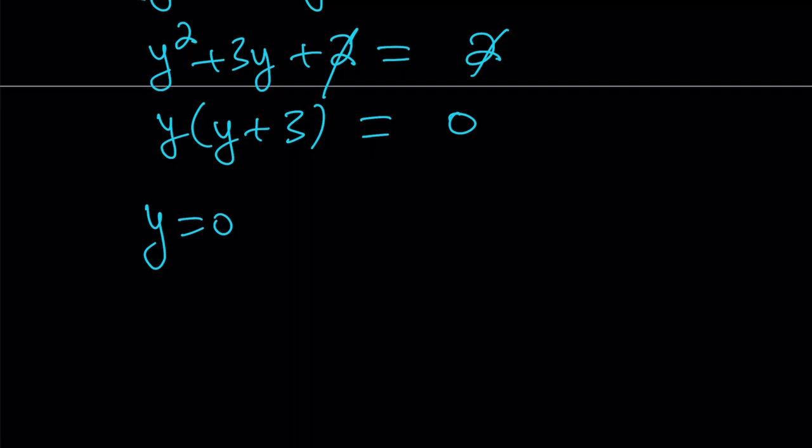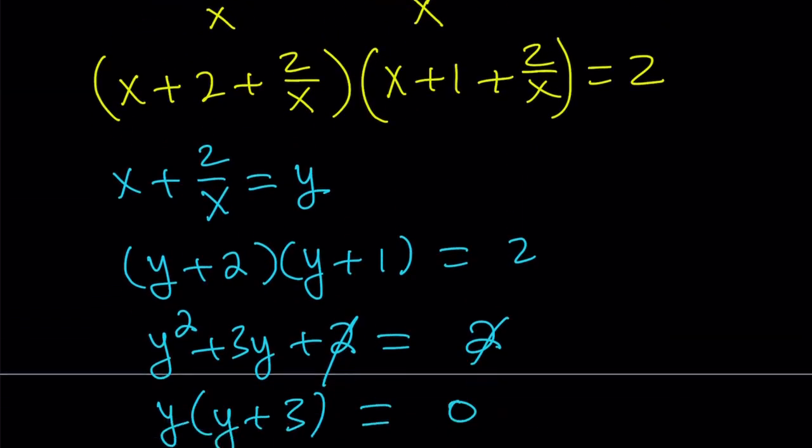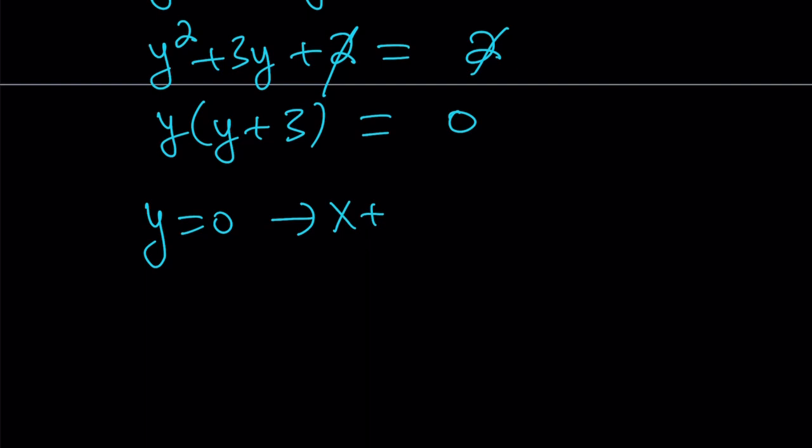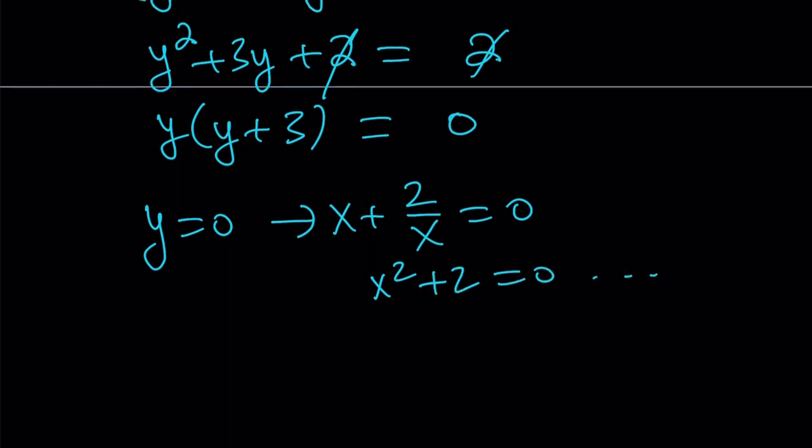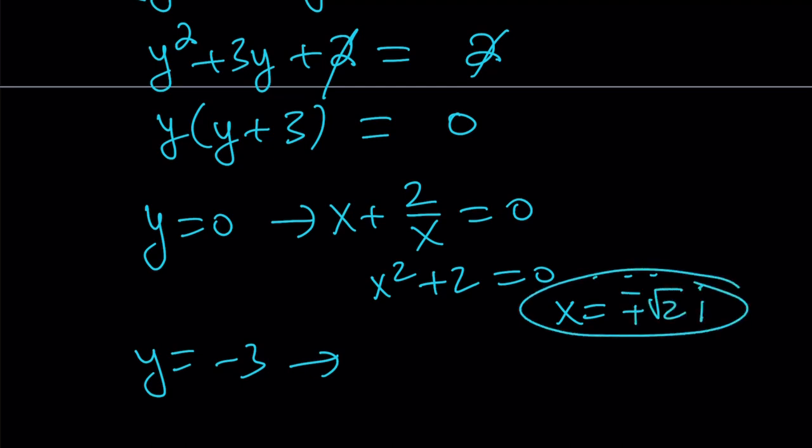From here we get two solutions, y equals 0. Let's see where y equals 0 takes us. Because we have x + 2/x equals 0. And obviously, this is going to give us the complex solutions, because this ends up being x² + 2 is equal to 0. And as you know, the results are the same. The solutions are going to be plus minus square root of 2i from here.